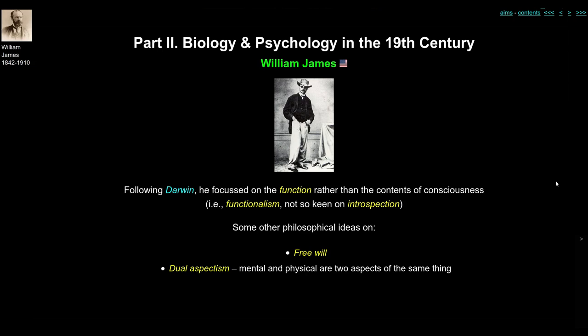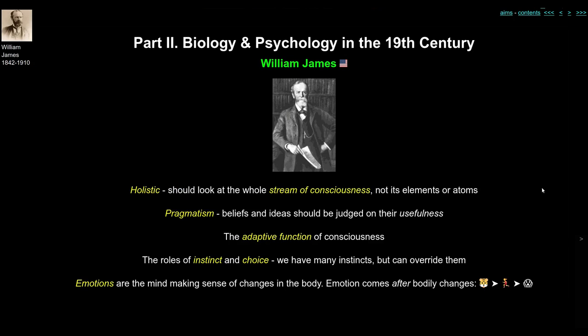James had broader thoughts on free will and whether mind and body are the same thing. One of his ideas was dual aspect — that mind and body are two aspects of the same physical thing. James was also a pragmatist: he thought beliefs and ideas should be judged on whether they are useful. Echoing Darwin, he talked about the adaptive function of consciousness — what purpose does it serve in an evolutionary framework? He also talked about instinct and choice, arguing that humans have many instincts, perhaps even more than animals, but are able to override them by choice.